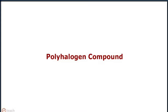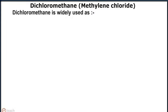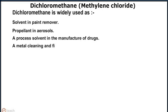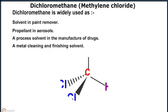Halogen Compounds: Dichloromethane, i.e., Methylene Chloride or CH2Cl2. Dichloromethane is widely used as a solvent in paint remover, propellant in aerosols, a process solvent in the manufacture of drugs, and a metal cleaning and finishing solvent.